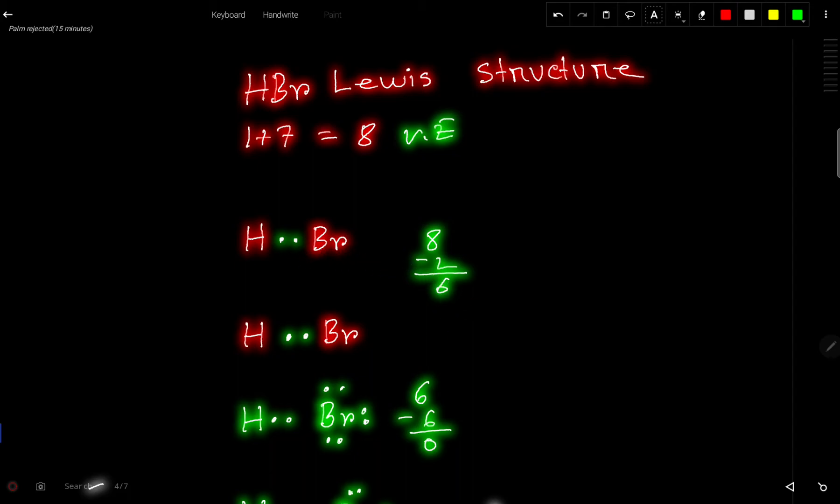These six valence electrons will be used to satisfy the octet for bromine. This bromine has six electrons needed, and we have six remaining. If you put them, you are getting this structure.